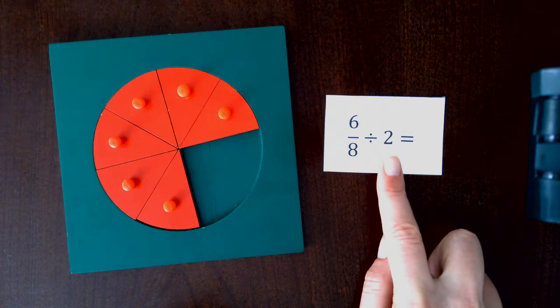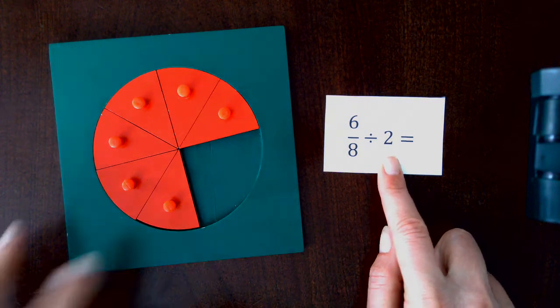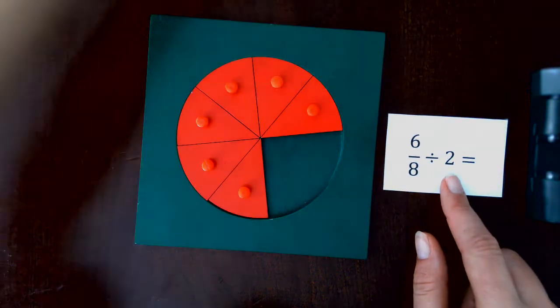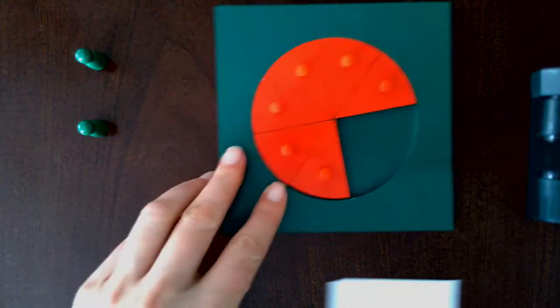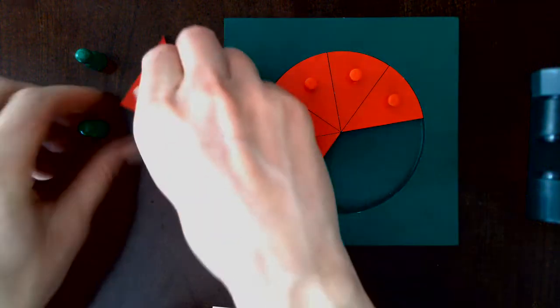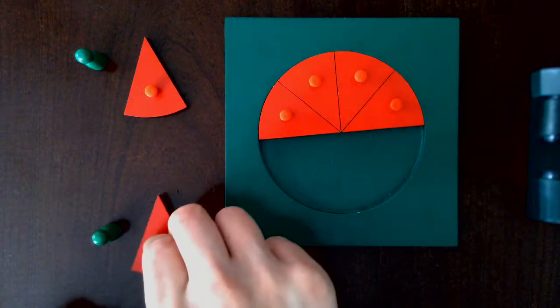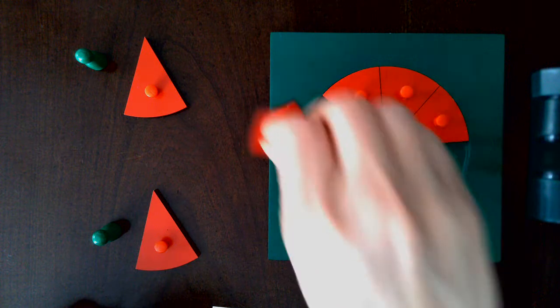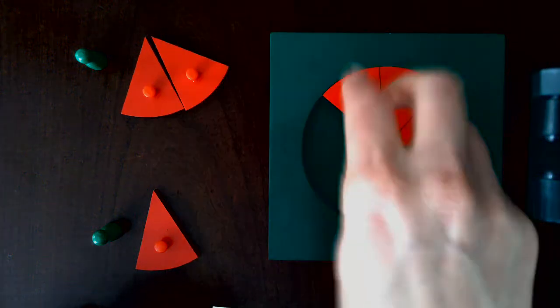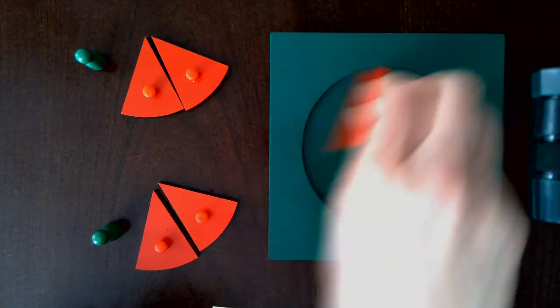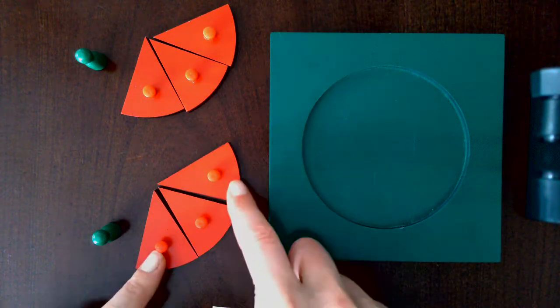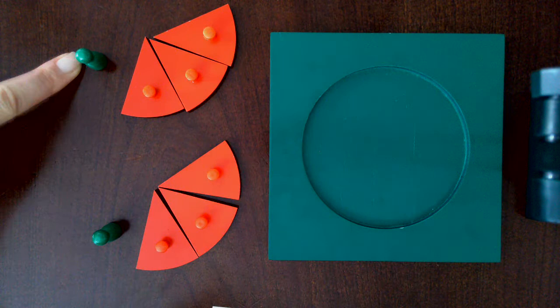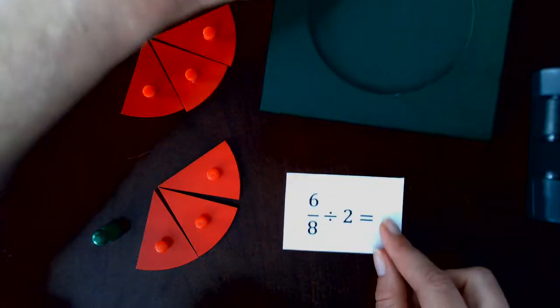And this tells us it's being divided into two. We'll put one skittle here and one here. Each of them will get an equal amount. And how much did one of them get? That's right, three-eighths.